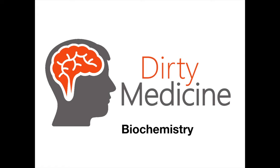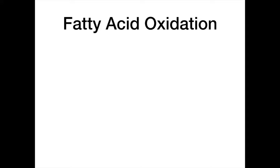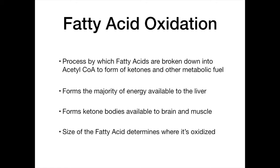In this lesson of Dirty Biochemistry in the Dirty Medicine series, we're going to be talking about fatty acid oxidation, also known as beta-oxidation. As a general overview, fatty acid oxidation is the process by which fatty acids are broken down into acetyl-CoA to form ketones and other metabolic fuel for various biochemical pathways. Beta-oxidation forms the majority of energy available to the liver.